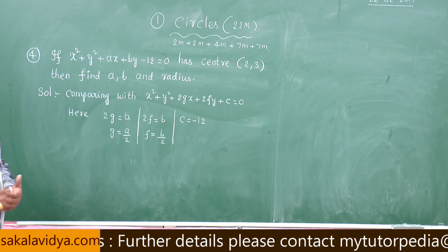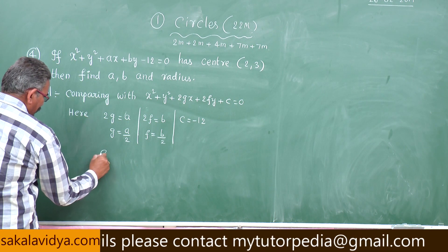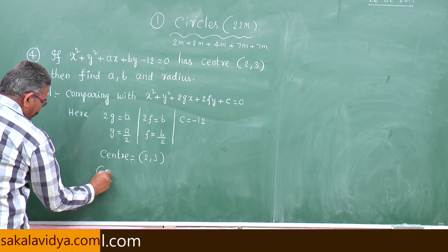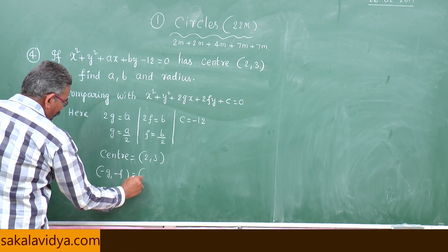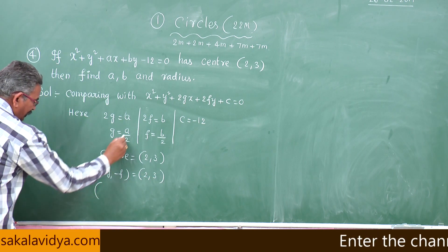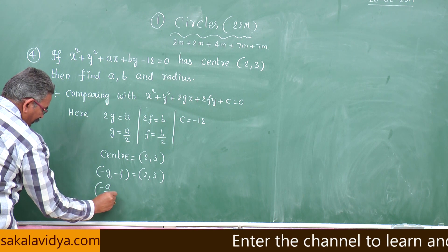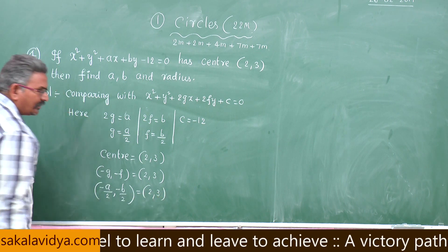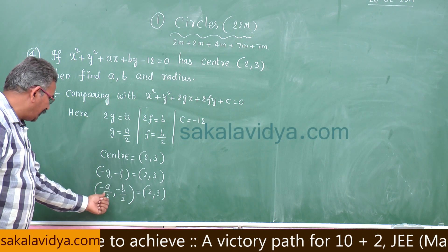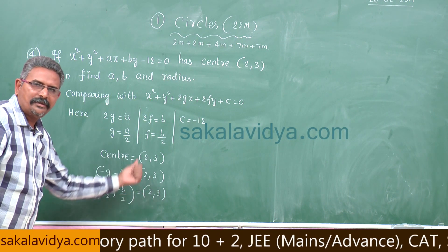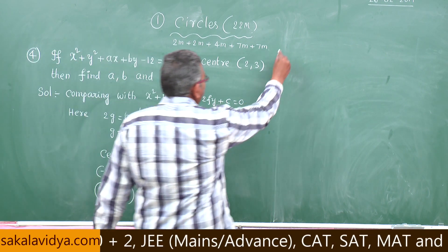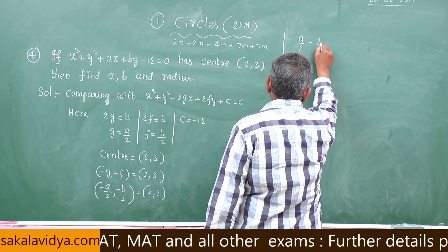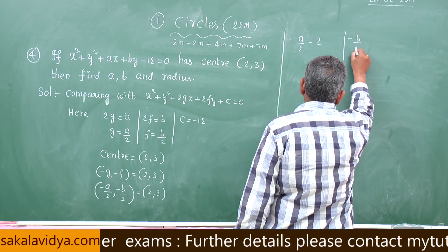Now let us proceed to the problem. Center is given as 2 comma 3. We know center is minus g comma minus f. So 2 comma 3, here g is a by 2, this will be minus a by 2 comma minus b by 2, equated to 2 comma 3. Comparing the two ordered pairs, the first coordinate must equal the first coordinate, and the second coordinate must equal the second coordinate. So we get minus a by 2 equal to 2, and minus b by 2 is equal to 3.